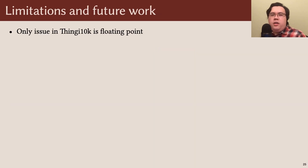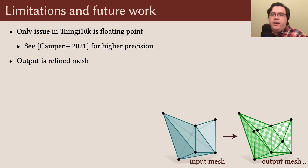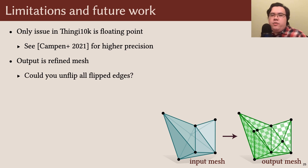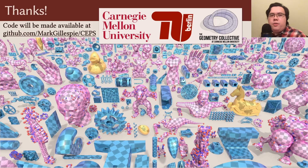Finally, some limitations and future work. Although our algorithm is guaranteed to work in exact arithmetic, floating point can be a problem in extreme cases. For an investigation of higher precision schemes, see the concurrent work of Kampen and colleagues. Second, while variable triangulations are the key to our robustness, it's sometimes undesirable that we output texture coordinates on a refined mesh rather than the input mesh itself. It would be interesting to investigate schemes to simplify such output, perhaps by trying to unflip edges. Finally, if you only care about local injectivity rather than full conformal maps, then you can track correspondence in a simpler way. There may be room for other optimizations in this setting too. Thanks for listening.